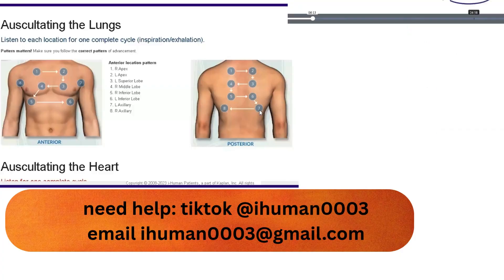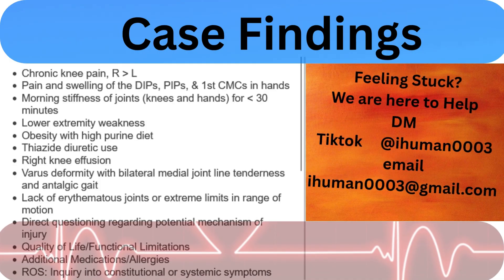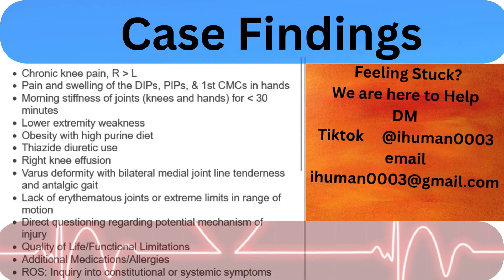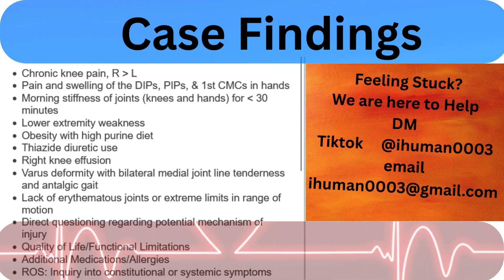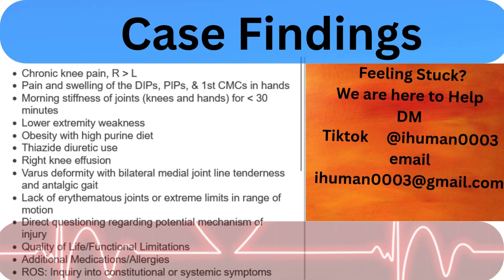The upper extremity is key. Palpate the wrists and hands. When testing ROM, flexion was restricted, and the patient was unable to fully straighten her knees.